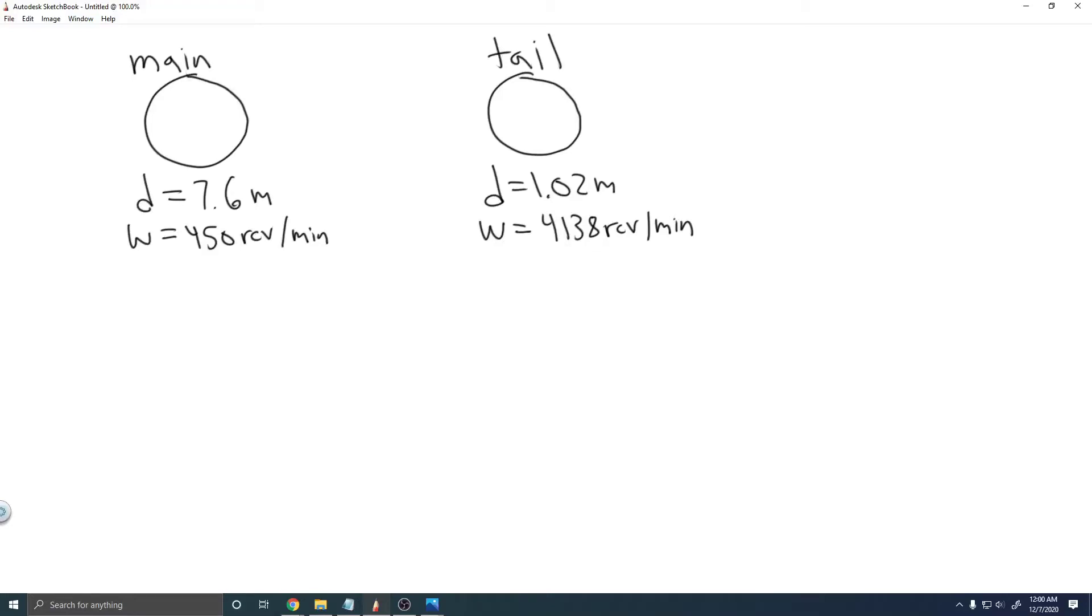In this problem, we're told the diameters of the main rotor and tail rotor of a single-engine helicopter are 7.6 meters and 1.02 meters, respectively. The respective rotational speeds are 450 revolutions per minute and 4,138 revolutions per minute. Calculate the speeds of the tips of both rotors. Compare these speeds with the speed of sound, which is 343 meters per second.